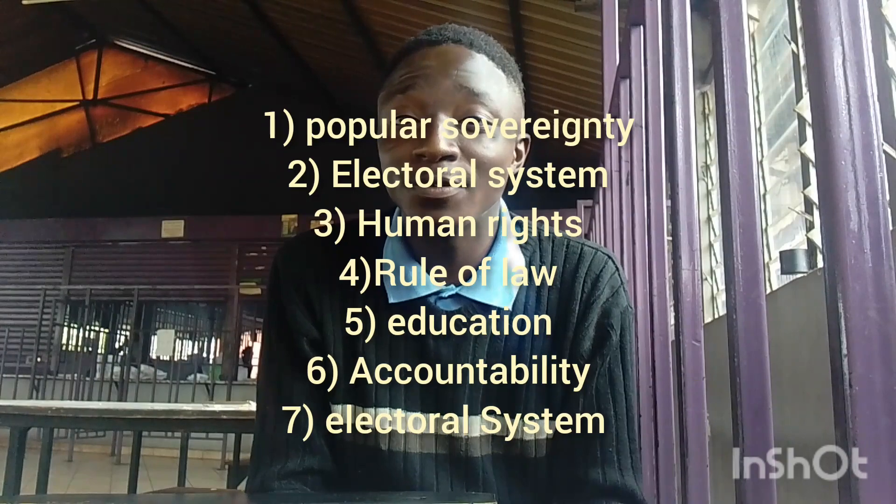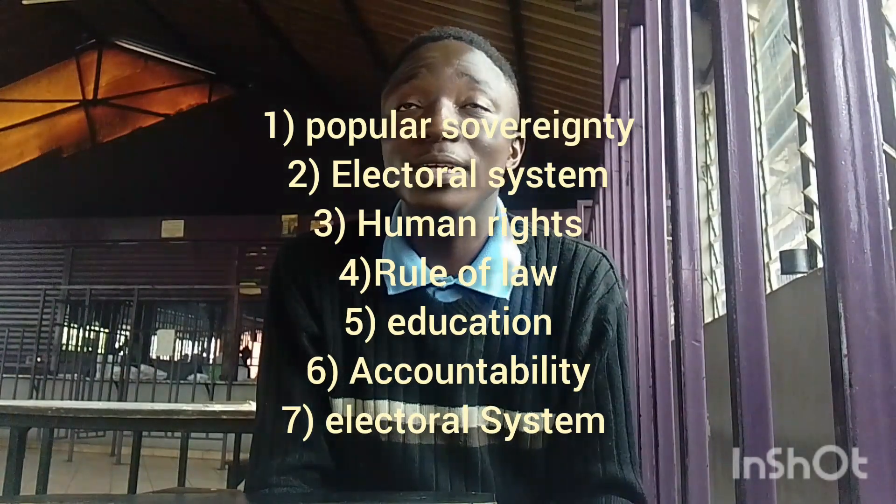So we have principles of democracy. The first principle is the principle of popular sovereignty, which ensures that the government in place must retain the consent of the people. Another principle is the principle of electoral system — that in a democratic country there must exist a good electoral system.